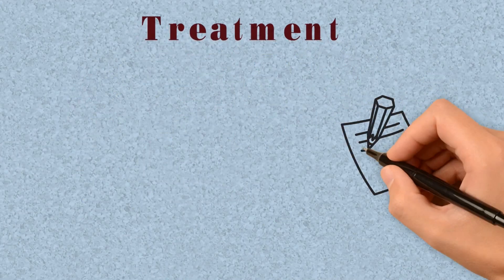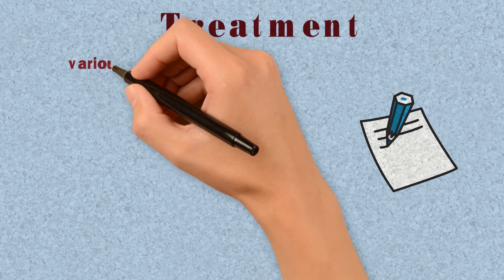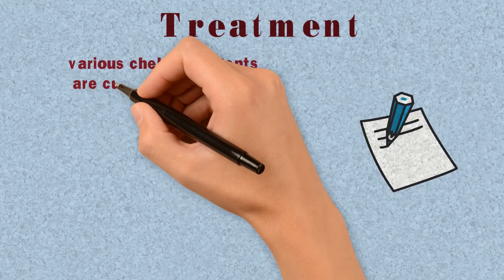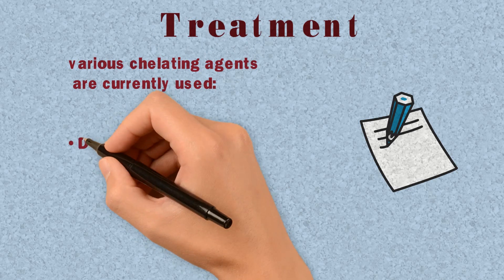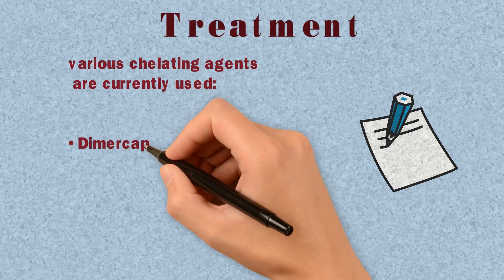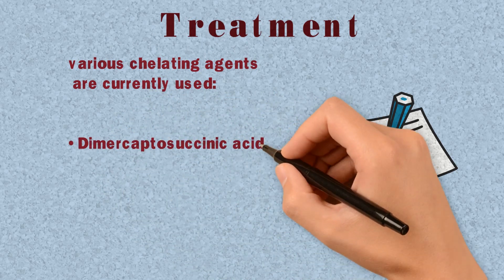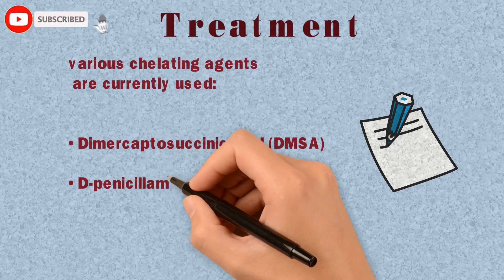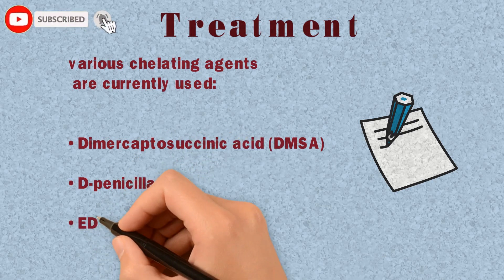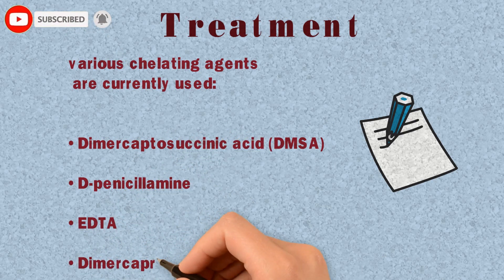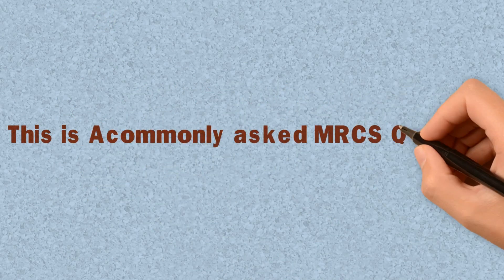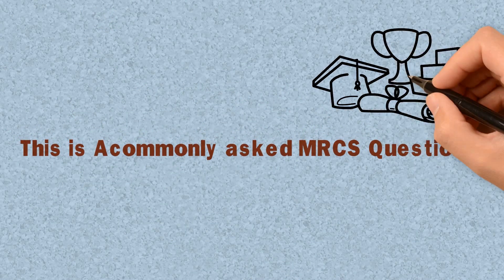For treatment, various chelating agents are currently used, such as dimercaptosuccinic acid (DMSA), D-penicillamine, EDTA, and dimercaprol. This is a commonly asked MRCS question.